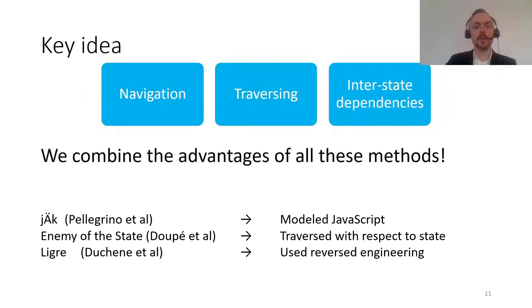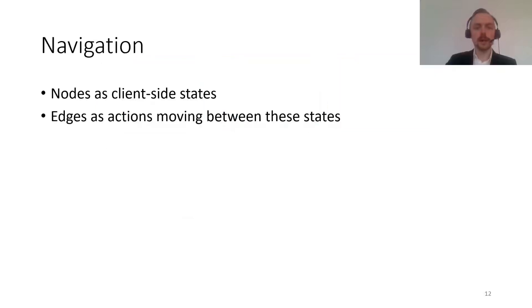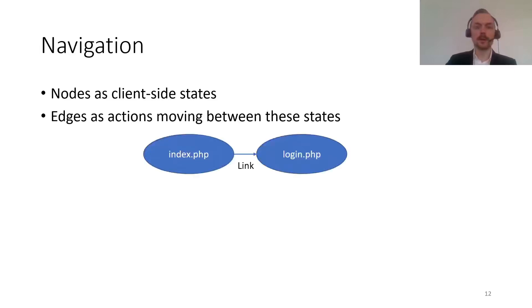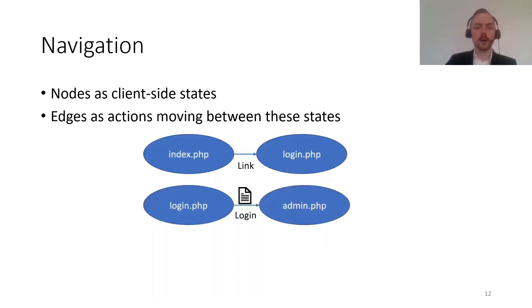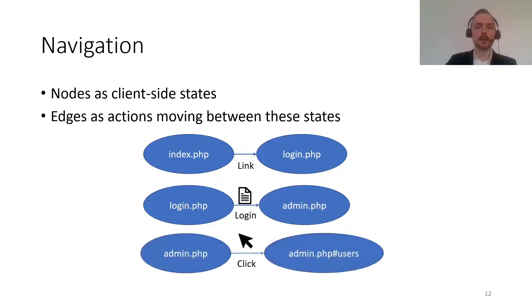Our key idea is to combine the advantages of all of these methods into one approach. To handle navigation, we treat the nodes in the graph as client-side states, and the edges between these nodes are the actions needed to move between these states. On the index page, we might follow a simple link to the login page, but on the login page we re-render the form, add the values, and submit it to log into the admin page. For JavaScript events, we model all of them and execute them in a real browser — actually clicking buttons or typing text to trigger onChange events.